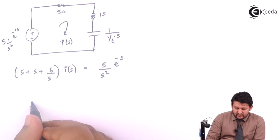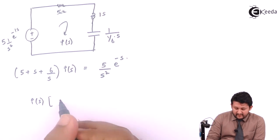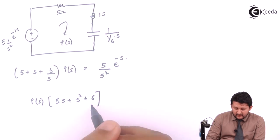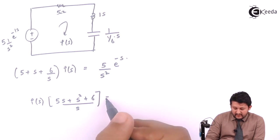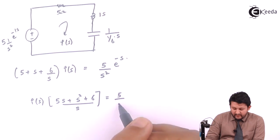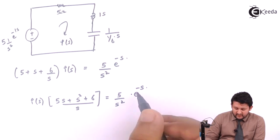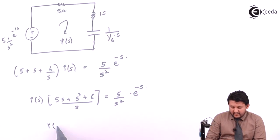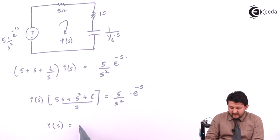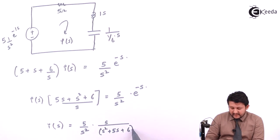So take LCM, so you get I of S bracket, phi S plus S square plus 6, whole upon S equal to phi upon S square into e raise to minus of S. So shift that side, so you get I of S equal to, when you shift, phi upon S square into S upon S square plus 5S plus 6 into e raise to minus S.